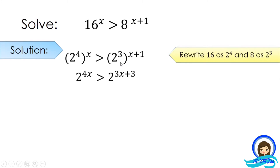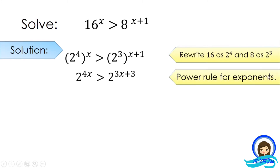We apply the laws of exponents — specifically the power rule. 4 times x is 4x, and 3 times x is 3x. 3 times 1 is 3. We distribute the exponents. Now, since they already have the same base, we equate the exponents: 4x is greater than 3x plus 3.